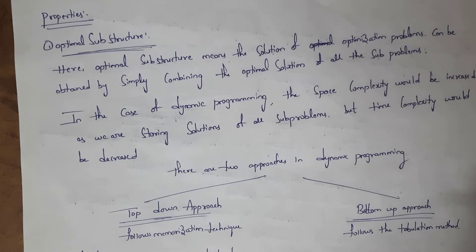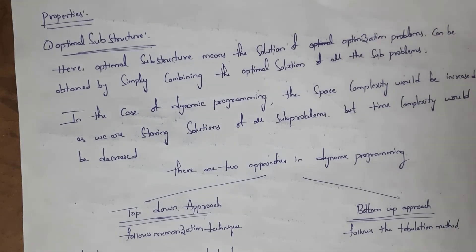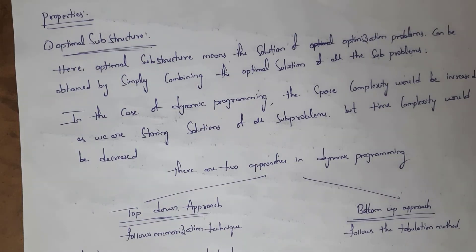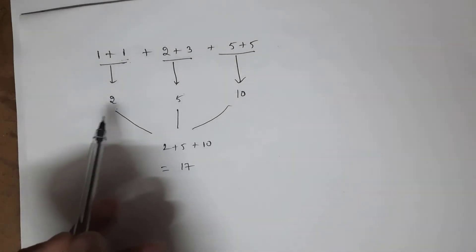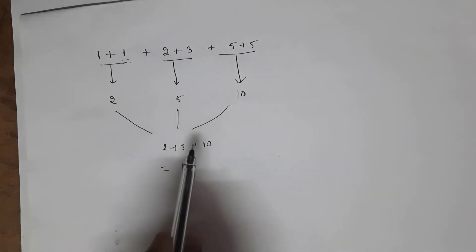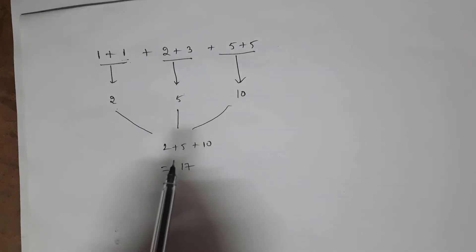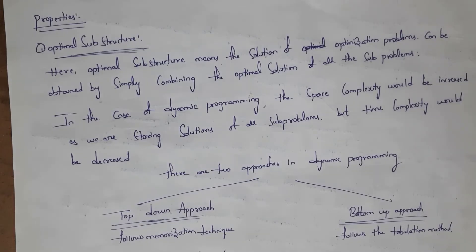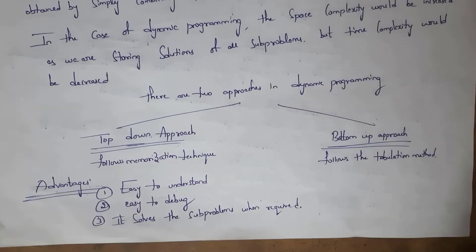In dynamic programming, we are storing solutions of all sub-problems, so space complexity would be increased. But time complexity will be decreased because, as we are finding solutions to the sub-problems and then combining these solutions, it becomes easier. So time complexity would be decreased.